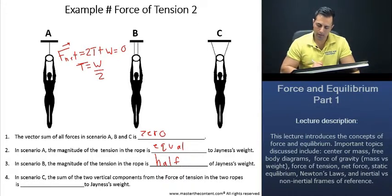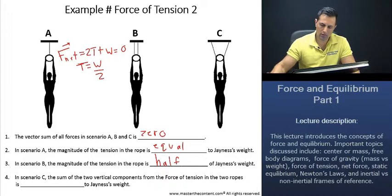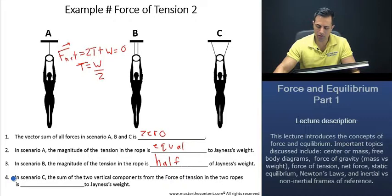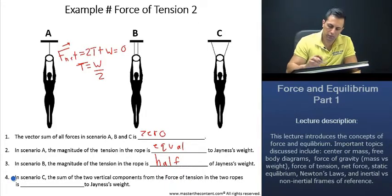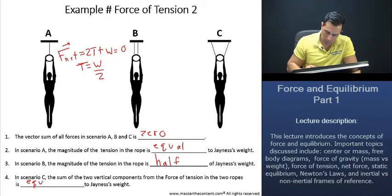Wonderful. Now, what about our last question here? It says, in Scenario C, the sum of the two vertical components from the force of tension in the two ropes is blank to Janus' weight. Well, the sum of the two vertical components is going to be equal to Janus' weight. Great.